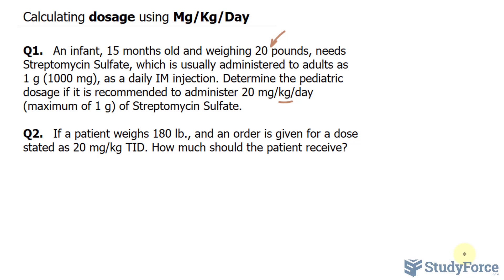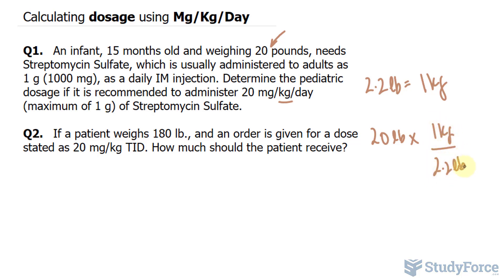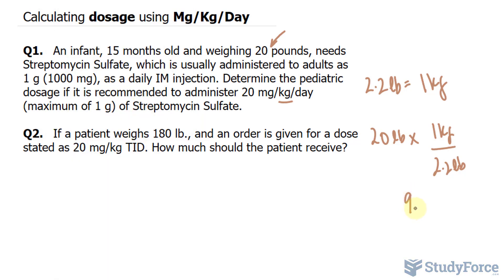So what we have to do is convert 20 pounds into kilograms. The conversion ratio for pounds to kilograms is 2.2 pounds equivalent to one kilogram. I can take 20 pounds and multiply it by 1 kilogram per every 2.2 pounds — in other words, dividing by 2.2. 20 divided by 2.2 gives us approximately 9.09, which I'll round to one decimal place as 9.1 kilograms.